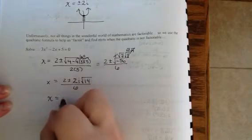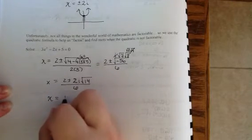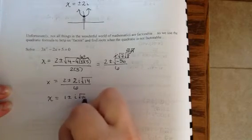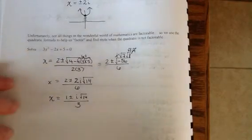And then we can simplify it. Everything here reduces by a 2, so 1 plus or minus i, or 1i, the square root of 14, all over 3. This is your 2 answers. This quadratic has 2 zeros. They're imaginary again.